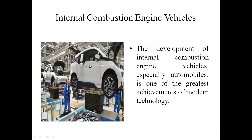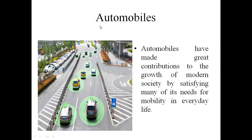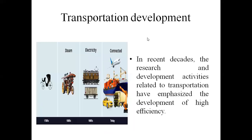This is the development of vehicles and income-related aspects. The next slide covers transportation development. There are four images here: the 1700s steam vehicle, an 1800s-style vehicle, electricity-based vehicles in the 1900s, and today's transportation including aeroplanes, navigation, two-wheelers, four-wheelers, and heavy vehicles. This represents the past 300 years of transportation development — 1700, 1800, and 1900 years.